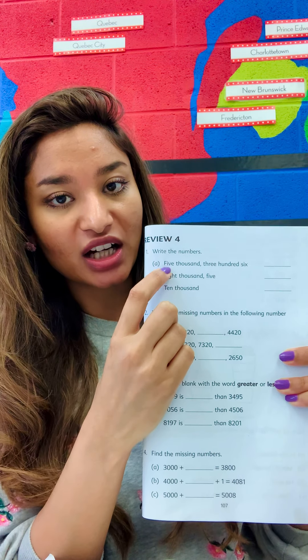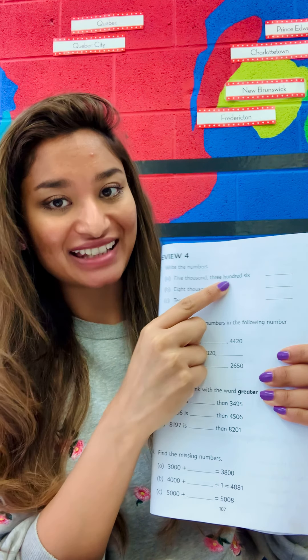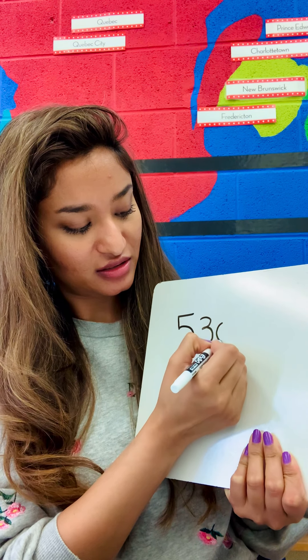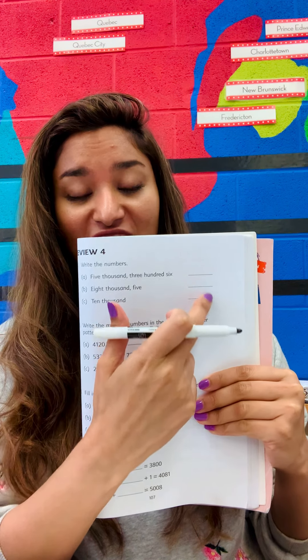On this first page, they've given you numbers in words and you have to write them in numbers. For example, the first one is 5,306. So how would you write 5,306? You need to ask yourself, how many thousands do I have? I have five, so you have 5,000. So it says 5,306 — I have 5,300, I don't have any tens, and six. So that's what you need to do: write the numbers given in words as numbers. The first number is 5,306.